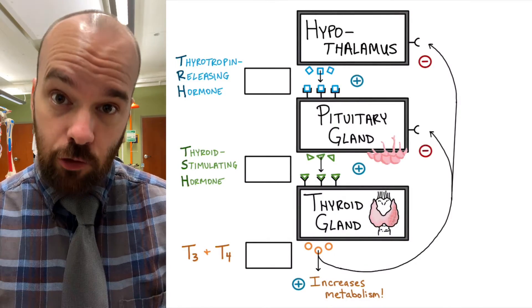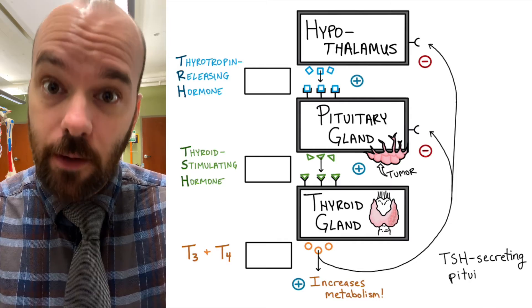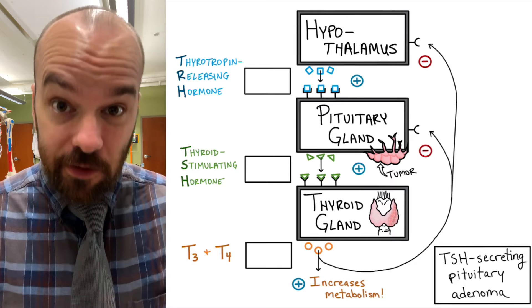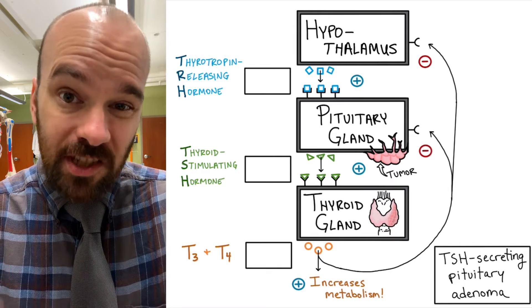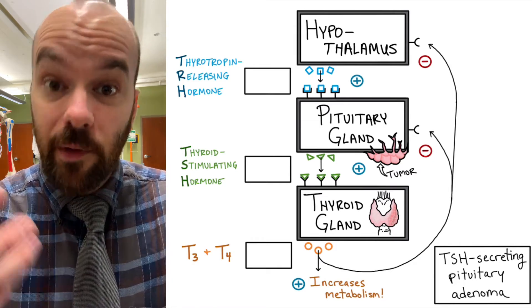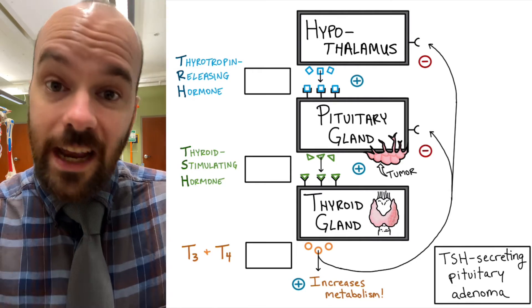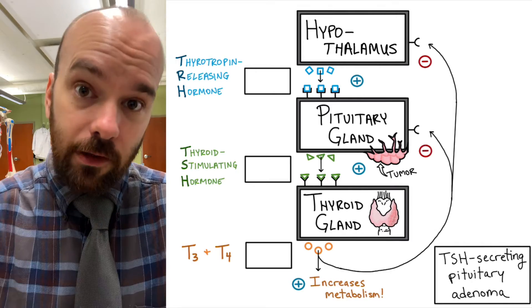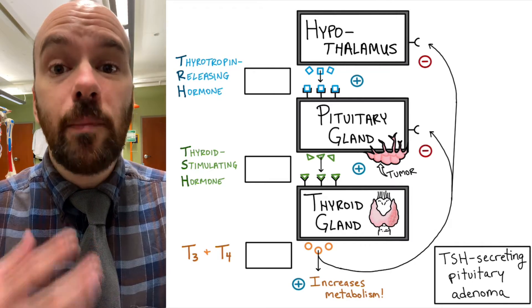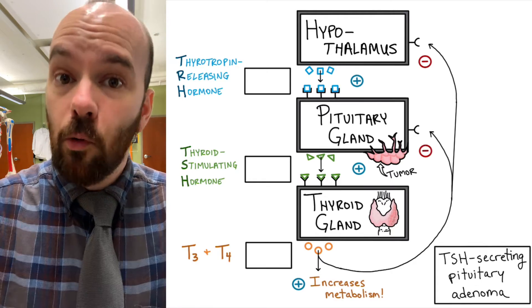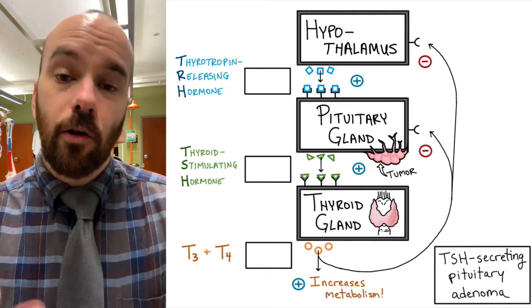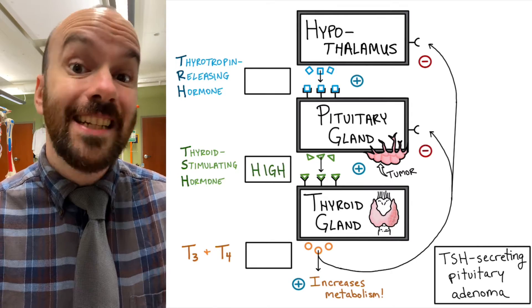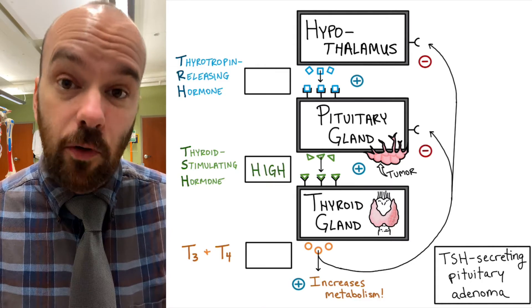First, let's look at a pituitary tumor — specifically a TSH-secreting pituitary adenoma. An adenoma is just a tumor that's non-malignant or non-cancerous. In this case, the tumor stems from the pituitary gland, specifically growing from the cells that secrete TSH. Because of the tumor, the pituitary is going to be releasing more TSH than it normally would, so our thyroid-stimulating hormone is going to be higher than it should be. No matter what else happens, we know TSH is going to be high — that's what the tumor is doing.